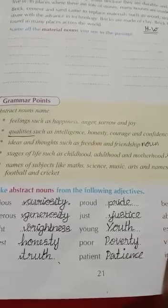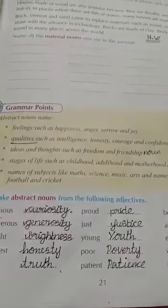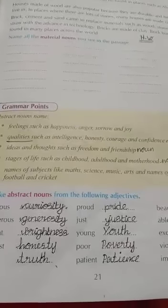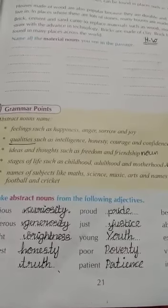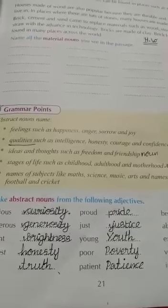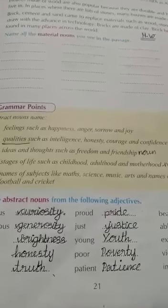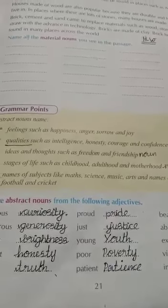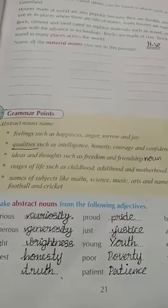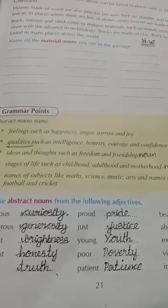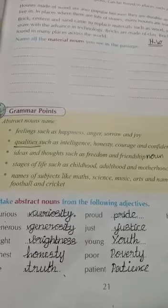Good morning children. In this grammar video, we will first recall the previous class. In the previous class, we learned the types of nouns. There are 5 types of nouns: proper noun, common noun, collective noun, material noun, and abstract noun. We have already learned the first 4 types. Now we are going to learn about abstract noun.